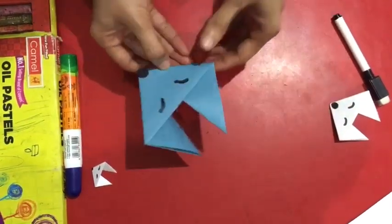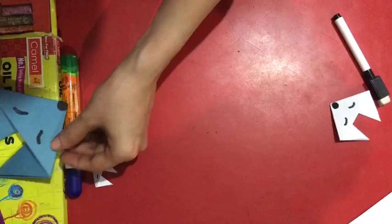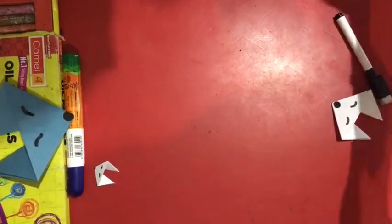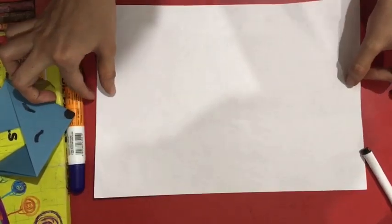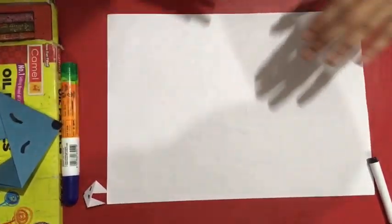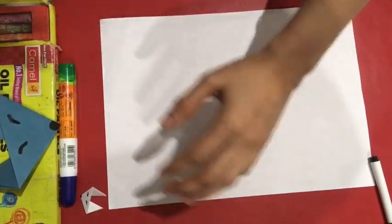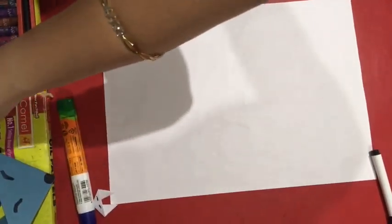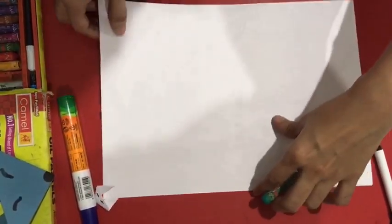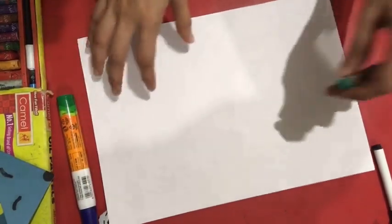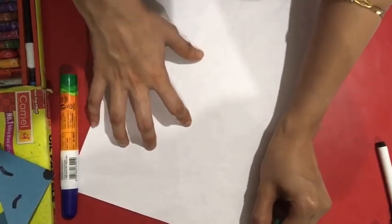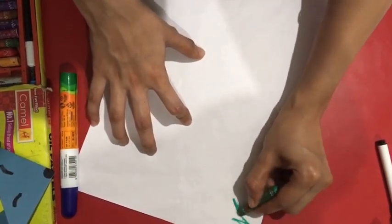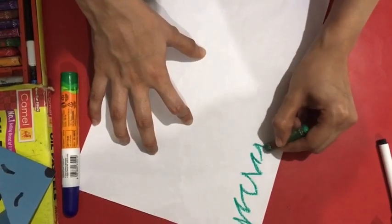Now, we will keep this aside. We will take a white blank A4 size sheet and place this on the table. At the bottom of this paper, we are going to draw green grass.